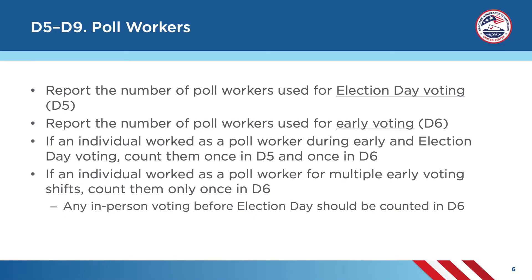Questions D5 and D6 ask you to record the number of poll workers used for election day and early voting. If a poll worker served in both capacities, they should be counted once in D5 and once in D6. However, if a poll worker served multiple shifts during early voting, they should only be counted once in D6. Please remember that any in-person voting before election day is considered early voting for EAVS, and any poll workers who assisted with this voting should be reported in D6.